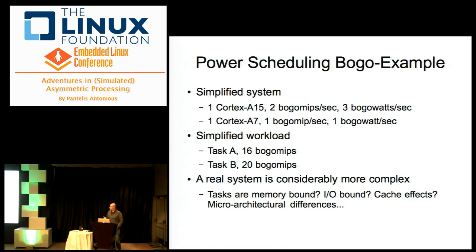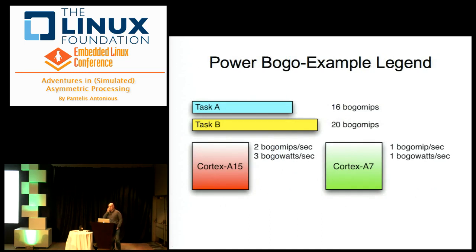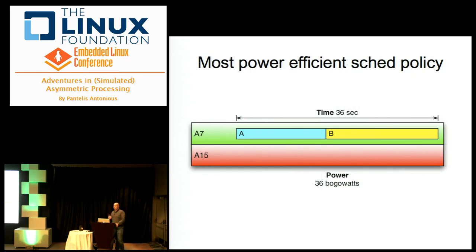The workload in our example is to run two tasks in parallel if possible: the first takes 16 BOGO MIPS and the second takes 20. A real system is much more complicated — tasks may be memory-bound, IO-bound, or cache-intensive. If we don't care about performance, we can run everything on the A7: both tasks execute in 36 seconds consuming 36 BOGO watts. That's the most power-efficient policy, but it means the fast CPU is just sitting there idle — you'd only use this if your battery is dying.